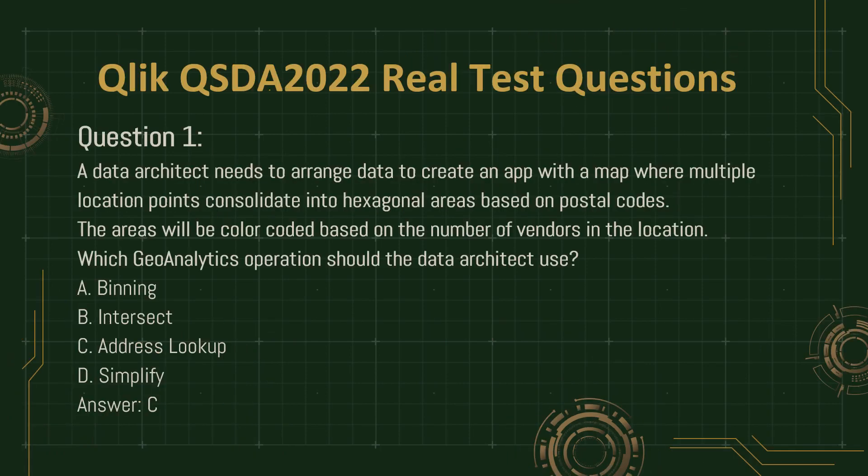Question 1. A data architect needs to arrange data to create an app with a map where multiple location points consolidate into hexagonal areas based on postal codes. The areas will be color-coded based on the number of vendors in the location. Which geo-analytics operation should the data architect use?